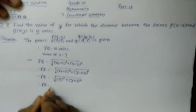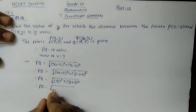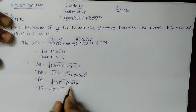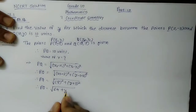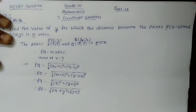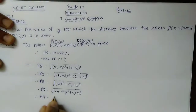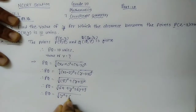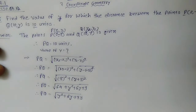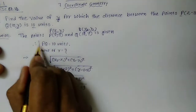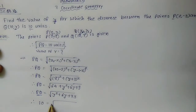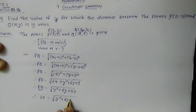So PQ = √[8² + (Y + 3)²]. Now 8² = 64, and expanding (Y + 3)² gives Y² + 6Y + 9. Therefore PQ = √(Y² + 6Y + 64 + 9) = √(Y² + 6Y + 73). Since PQ = 10, we write: 10 = √(Y² + 6Y + 73).